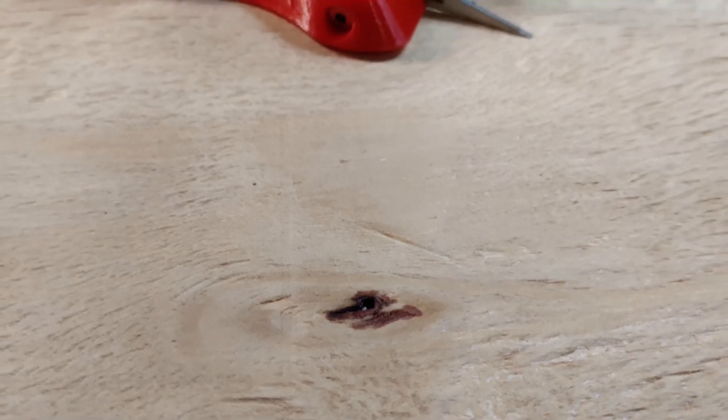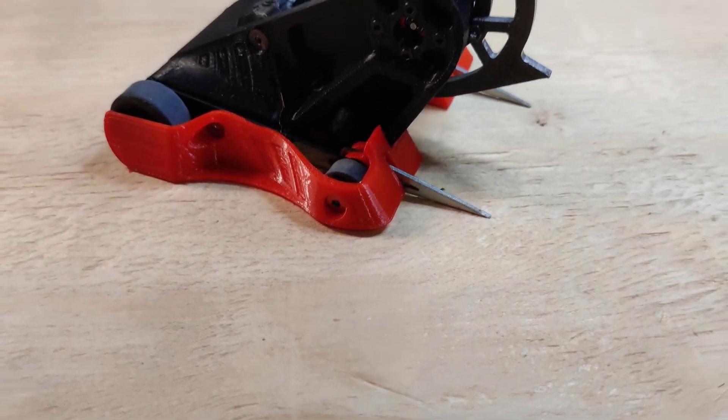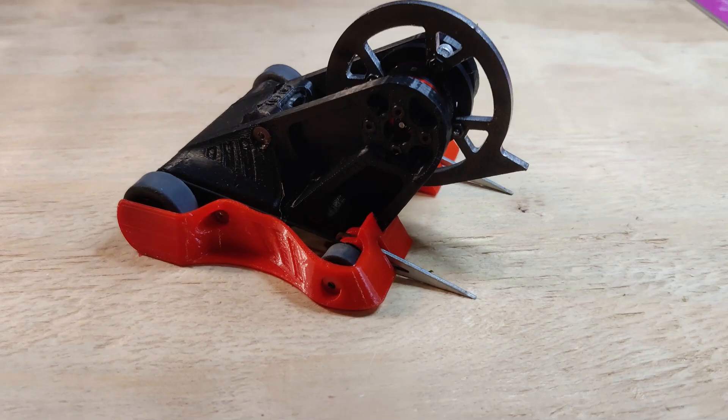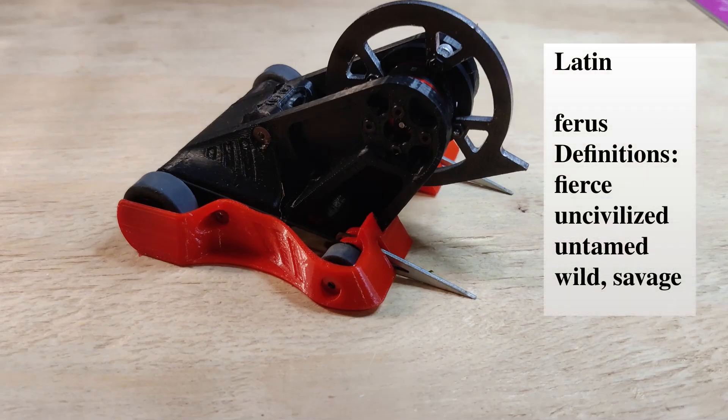This is my new 150 gram Antweight Ferris wheel. It's a four-wheel drive vertical spinner running an 1806 weapon motor, 180mAh 2S battery,